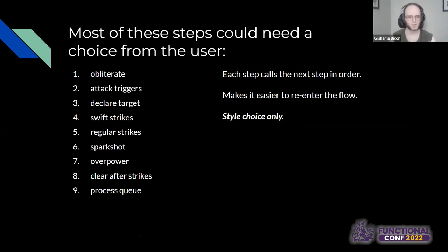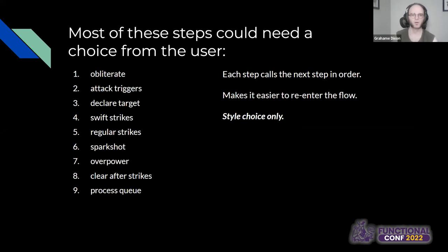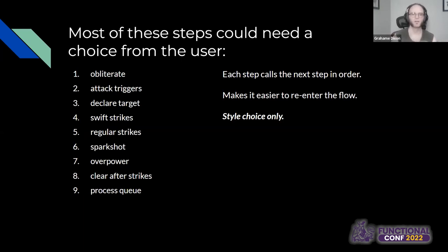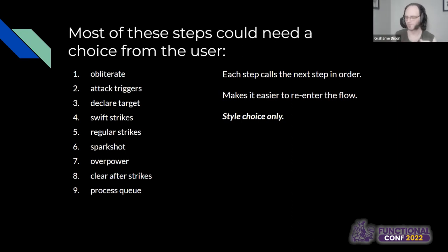The first step I took was to put all the different steps that could happen during an attack in order, modeling them as functions where each one calls the next function in order when it's done. The reason I did this is it makes it easier to re-enter the flow, as we'll see later. I want to be clear that for this pattern to work, having each function call the next is not strictly necessary — it's a style choice. There are other parts of the code where I use queues. But here I was really paranoid that everything had to be in the right order.